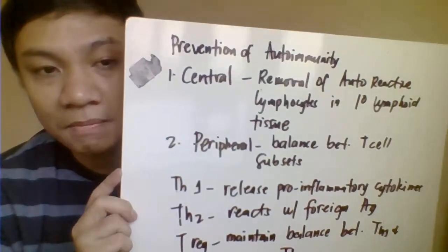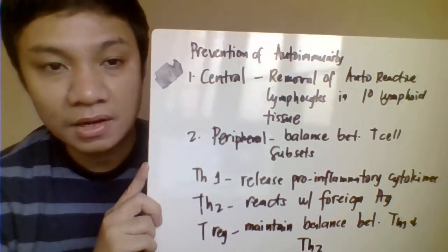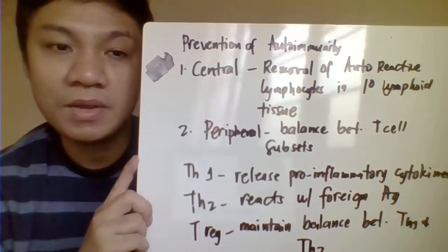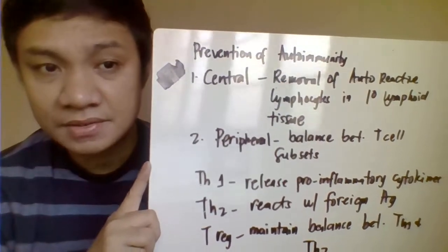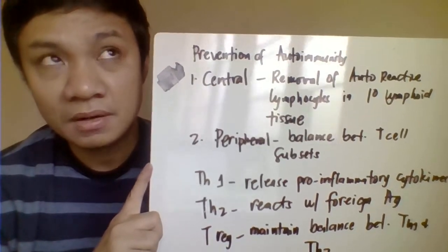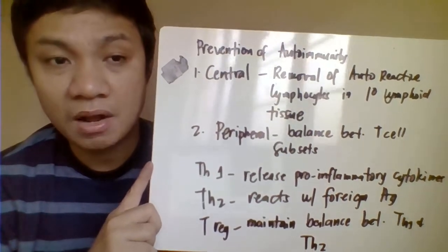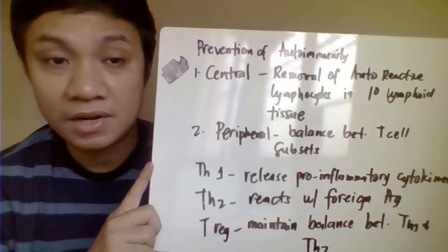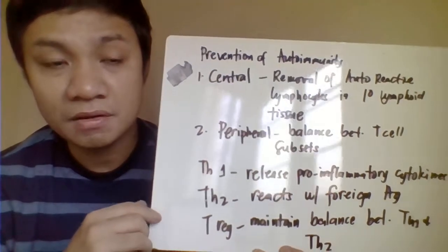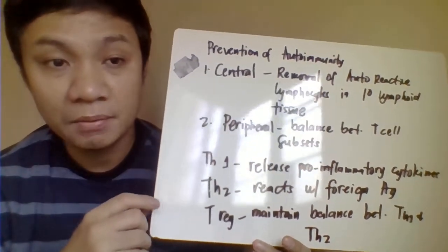To prevent autoimmunity, there are two mechanisms that protect our body. The first is central tolerance, which occurs in our lymphoid tissues. As discussed with the development of B and T lymphocytes, they undergo negative and positive selection processes that eliminate T and B lymphocytes which are able to react with self-antigens — those that cannot distinguish self from non-self — removing autoreactive B lymphocytes by apoptosis.